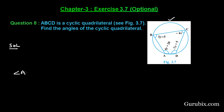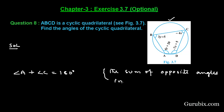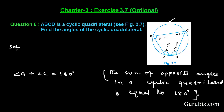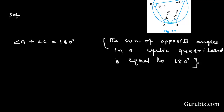Here we shall apply the result that the sum of angle A and angle C equals 180 degrees. The reason is that the sum of opposite angles in a cyclic quadrilateral is equal to 180 degrees. We are given angle A as 4y + 20 and angle C.